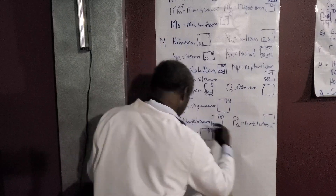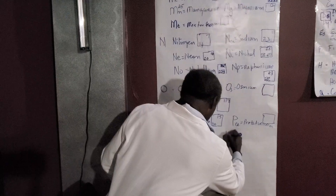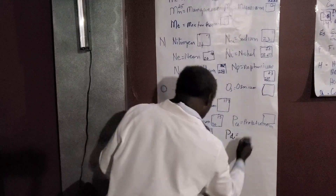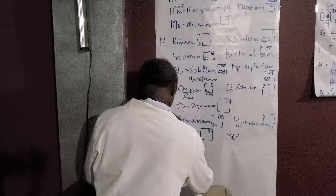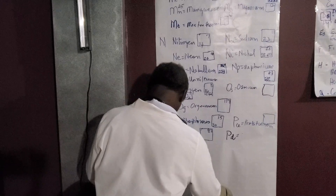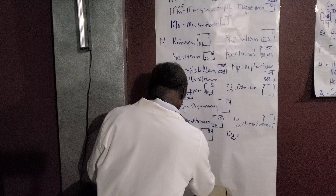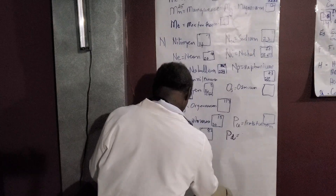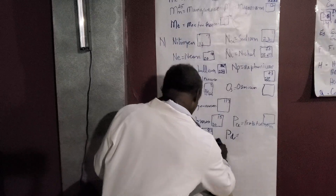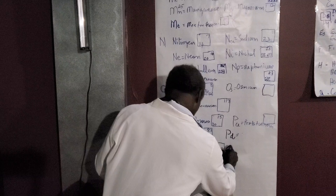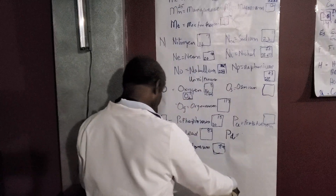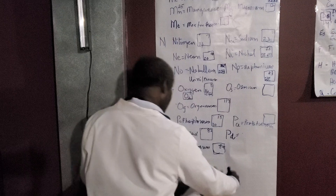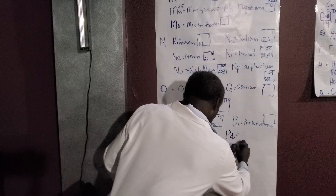Then going through the alphabet: PB, PC, PD — I know there's an element with PD — then PF, PG, PH, PI, PJ, PK, PL, PM, PN, PO — we have polonium at PO, atomic number 84 — PP, PQ, PR — we have praseodymium at PR.